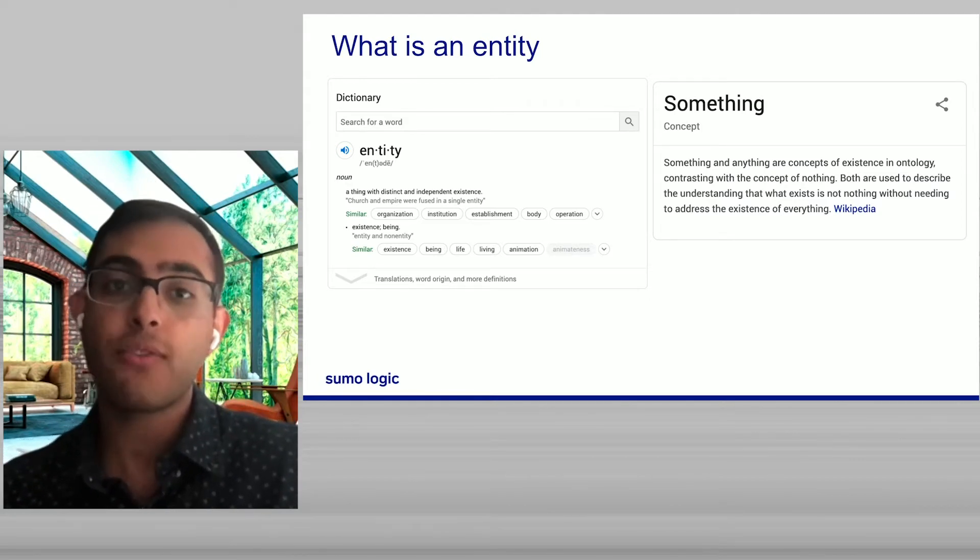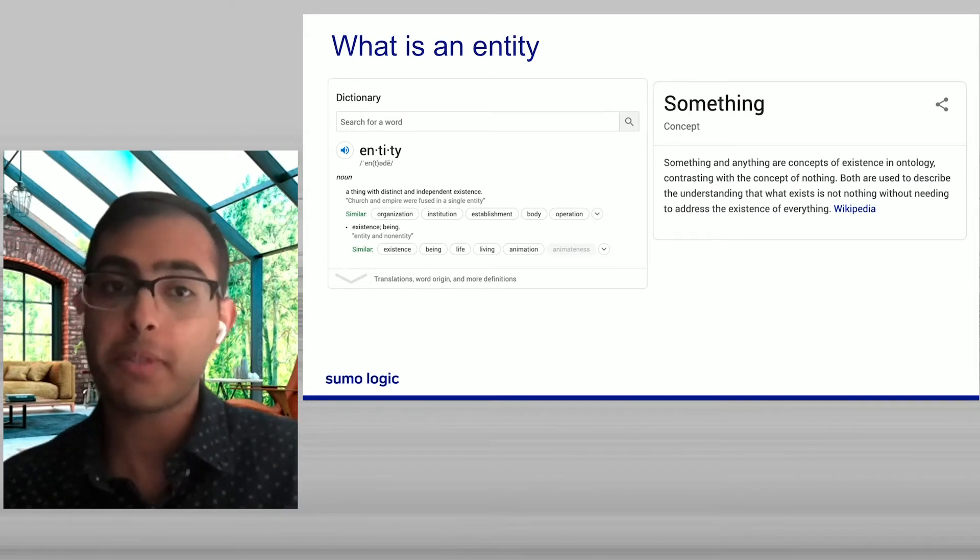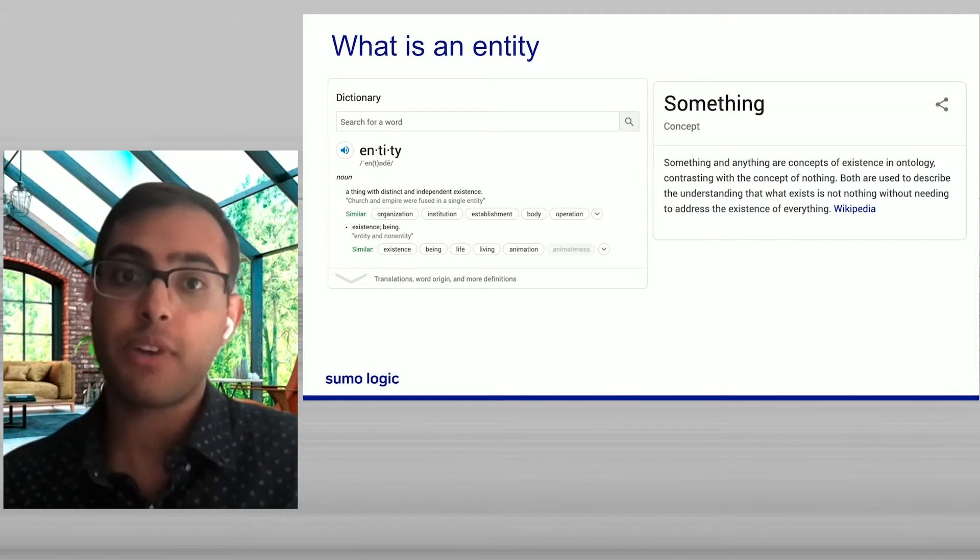So let's see, maybe if we scope this down to observability, we scope this down to our DevOps space, we can come up with a better definition, this kind of abstract definition that entity provides.